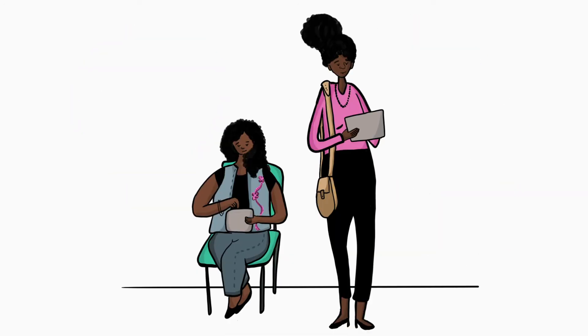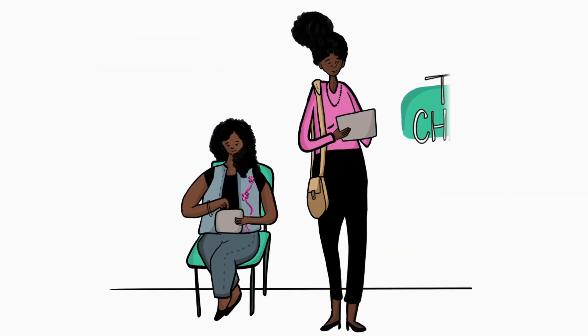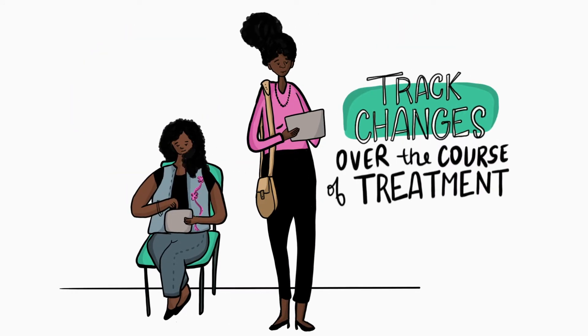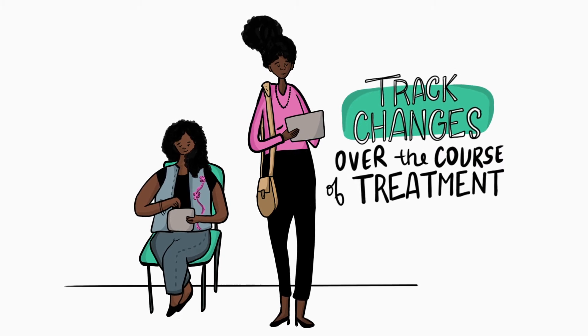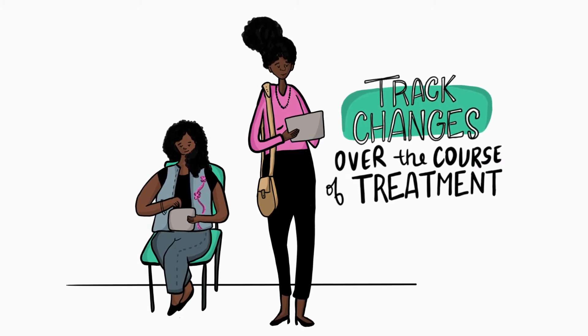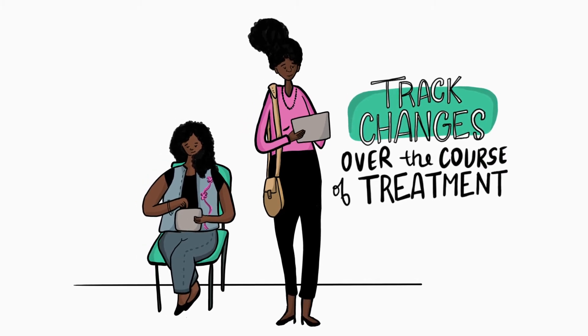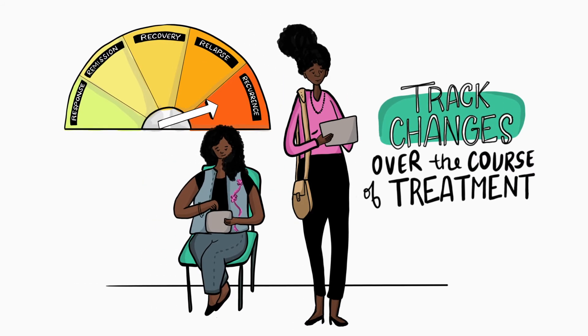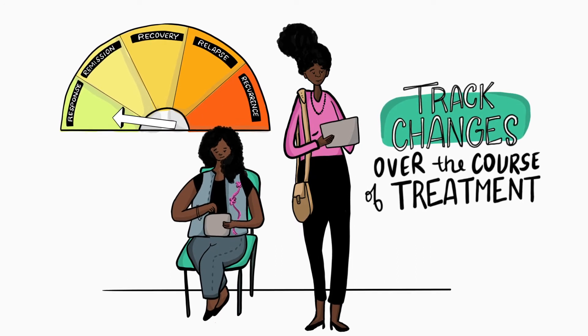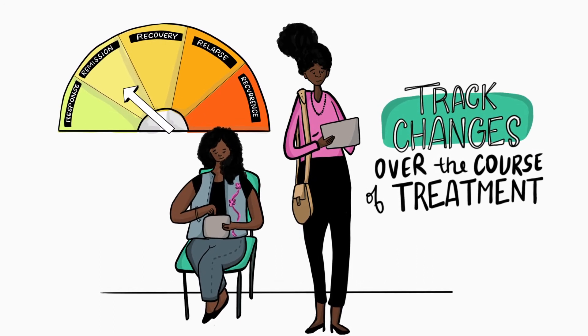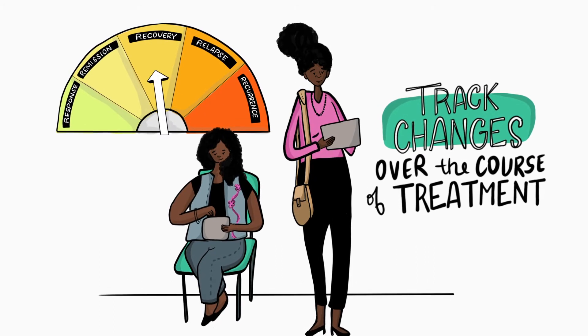You can track change in symptoms by having youth or parents complete the RCADS repeatedly over the course of treatment. RCADS scores can then help you determine if youth are responding to treatment, have gone into remission, have recovered, or relapsed.